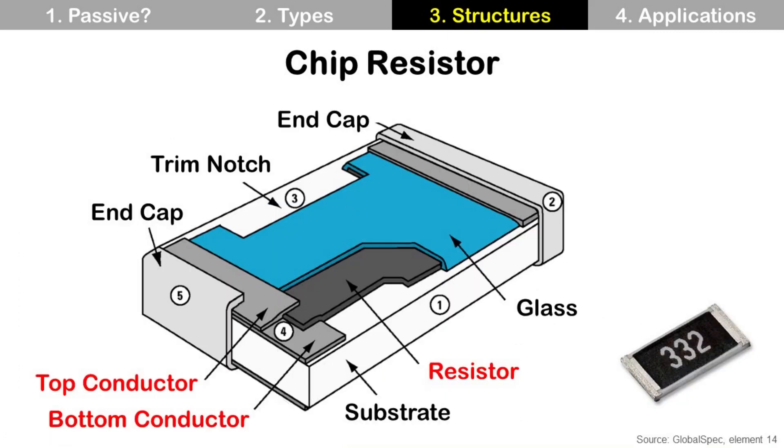Here is the structure of chip resistor. The key elements are resistor material and conductors.